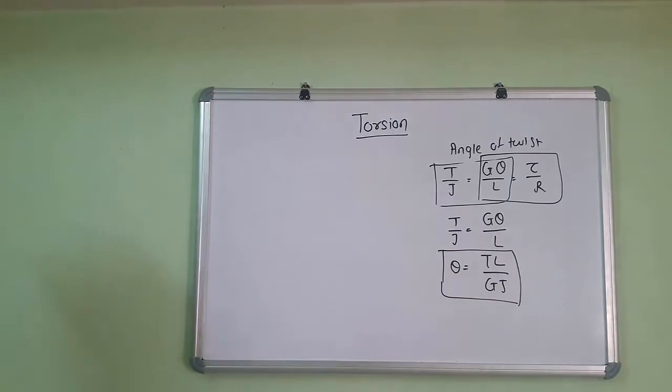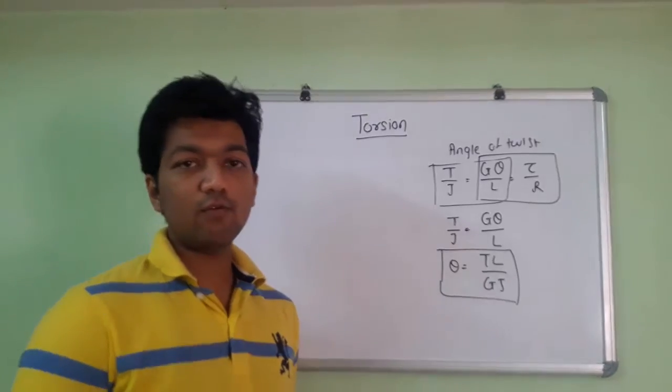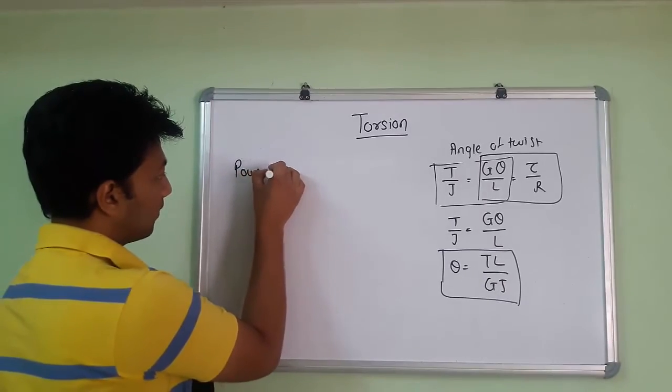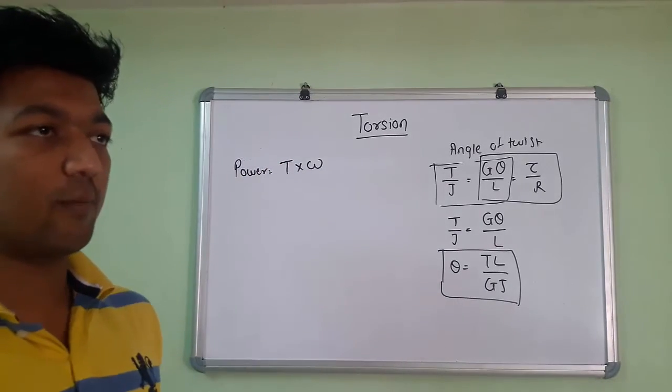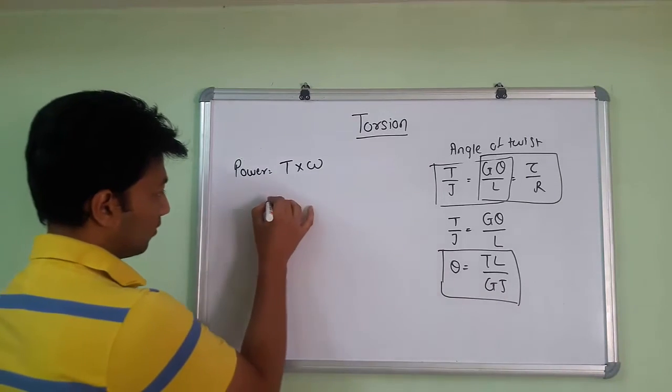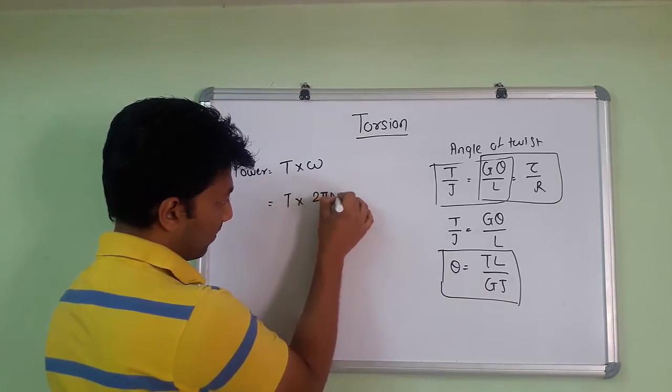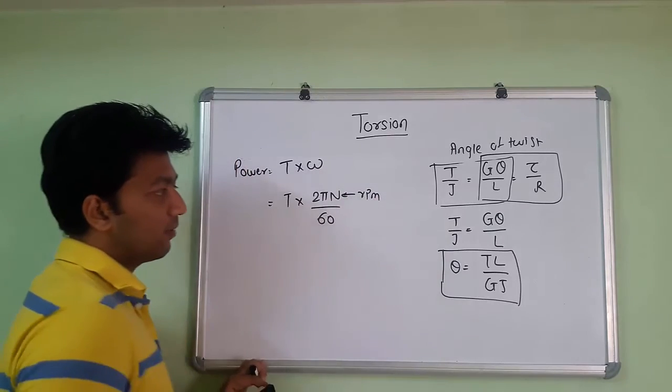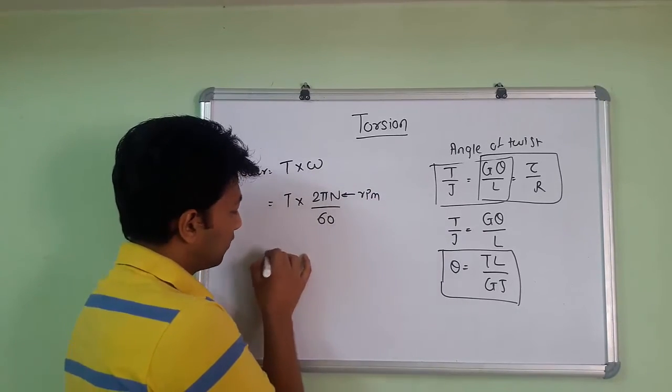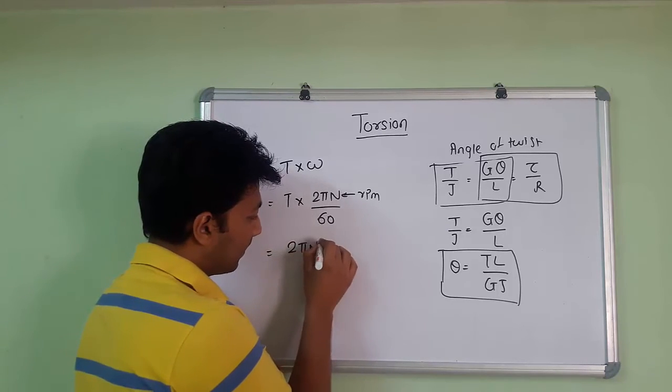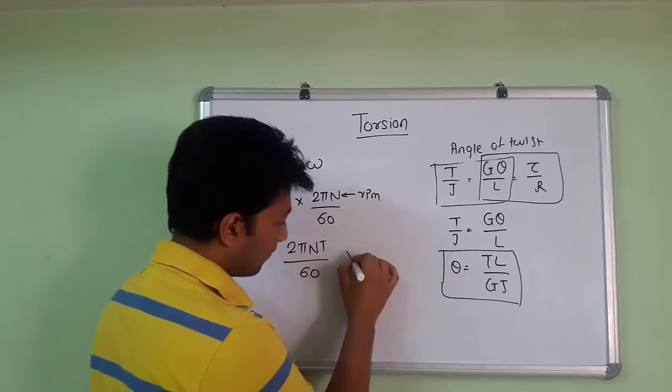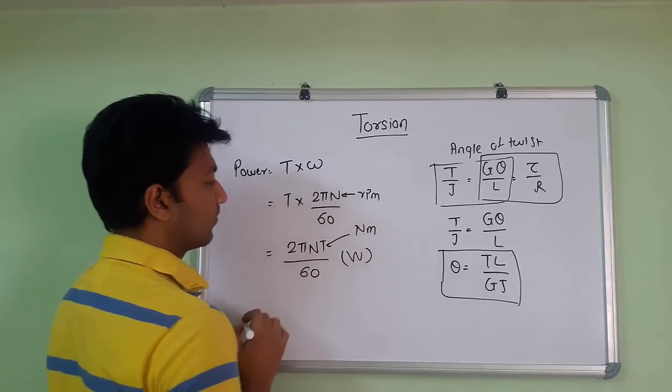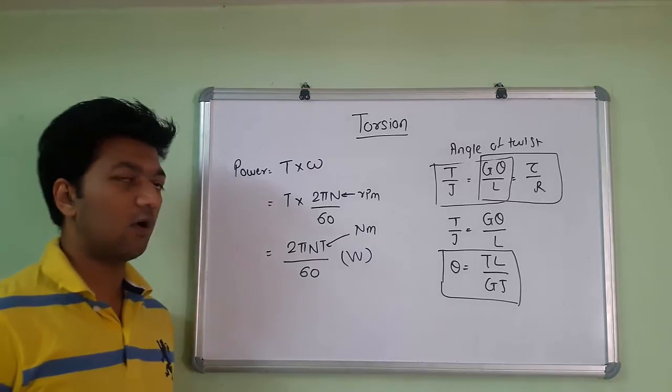Next we have to find the power. We know that power equals torque times omega. Value of omega will be 2 pi N. So that equals T times 2 pi N divided by 60. We divide by 60 because N is in RPM. Remember, when N is in RPM we divide by 60. The answer we get is in watts and the torque is in Nm. So this is all for torsion.